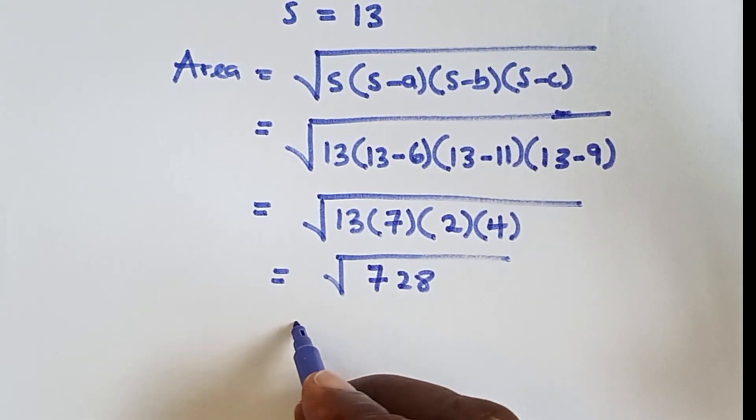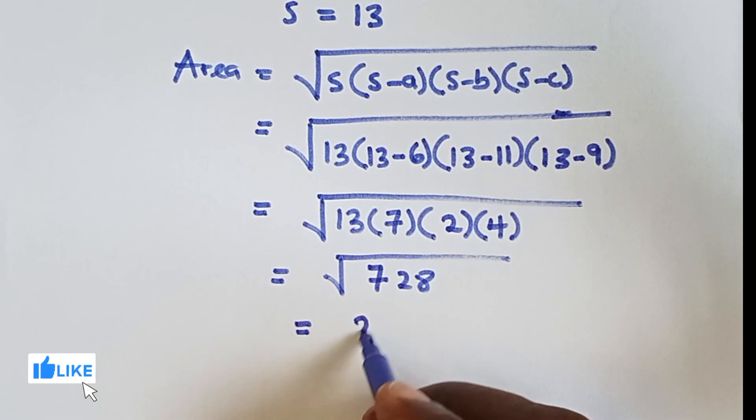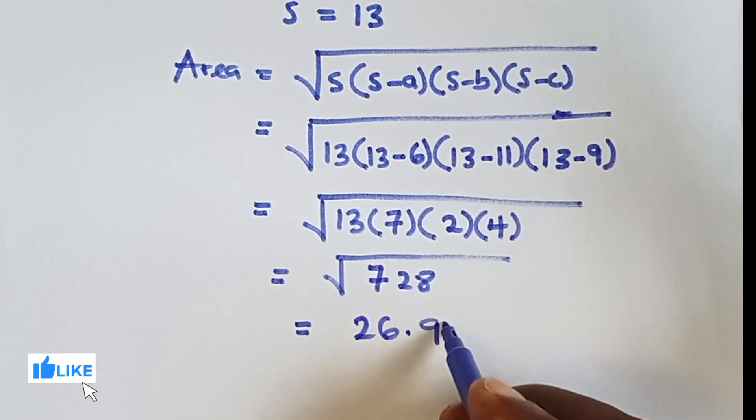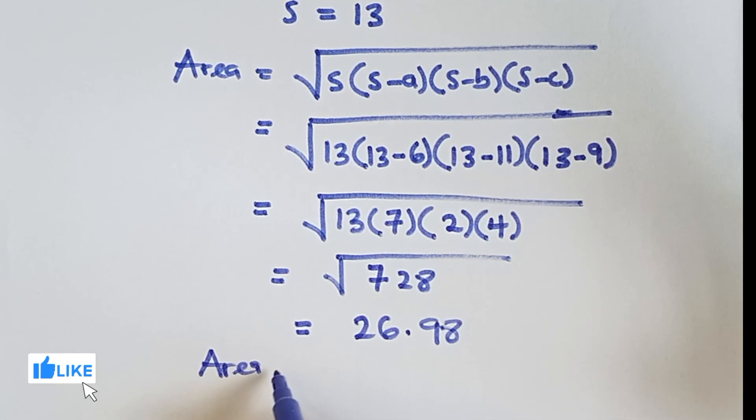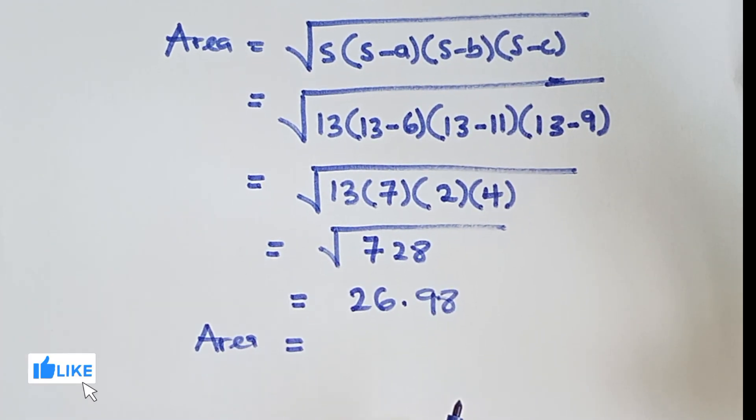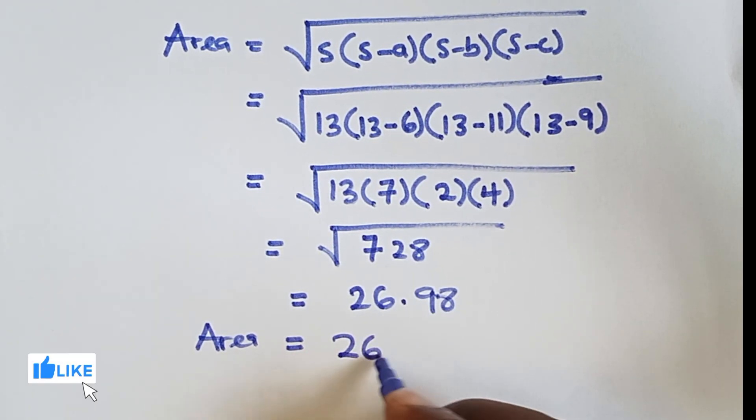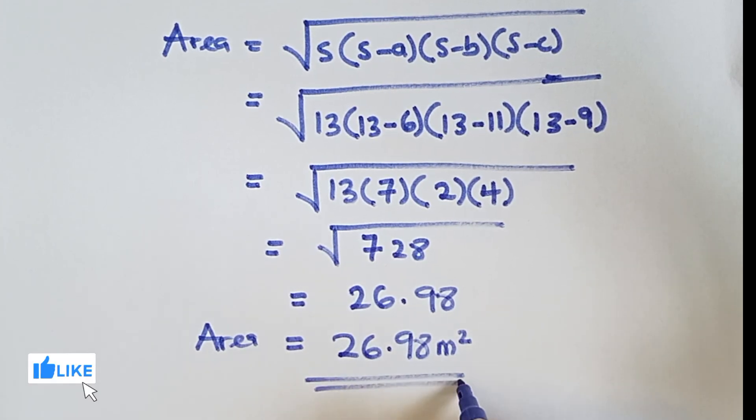And then we can find square root of 728 is 26.98. So it means the area of the triangle is approximately 26.98 meter square, and that is the final answer.